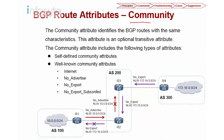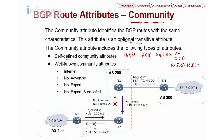Let's look into the community attribute. Community attribute is an optional transitive attribute. The main purpose of the community is as a tagging method — it is used to tag routes with a certain community value. This tag can be used for both internal AS and between ASs. Self-defined community attributes are in the format of 16-bit colon 16-bit, ranging from 0:0 to 65535:65535. Well-known community attributes include: internet, no-advertise, no-export, and no-export-sub-confederation.